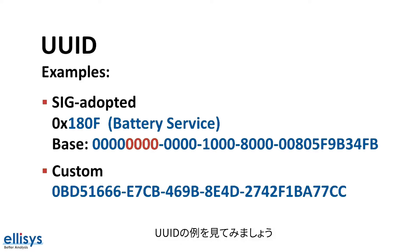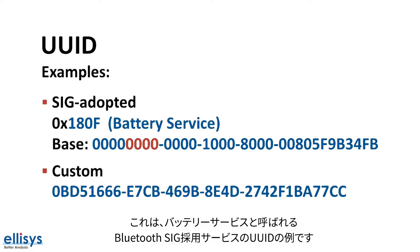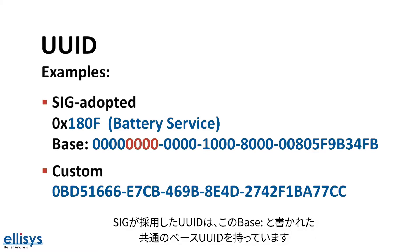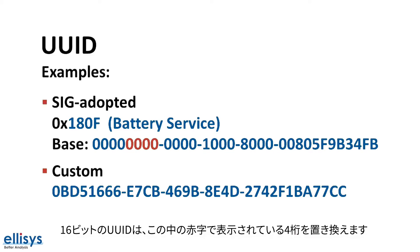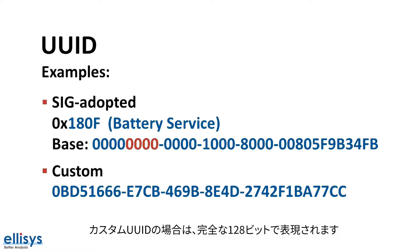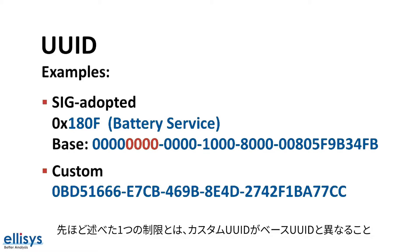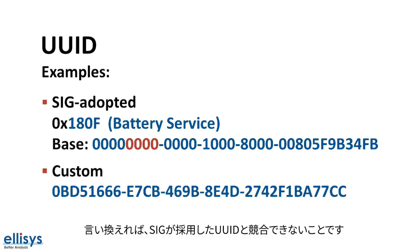Let's look at some examples of UUIDs. Here's an example of a UUID for a Bluetooth SIG adopted service called the Battery Service. UUIDs of SIG adopted attributes all have a common base UUID, which is shown here. The 16-bit UUID replaces the four digits highlighted in red. In the case of a custom UUID, it will be represented by the full 128-bit number. The one restriction is that a custom UUID cannot share the base or conflict with the SIG adopted UUIDs.